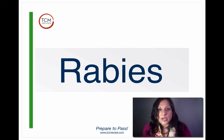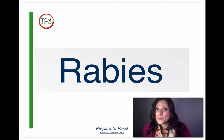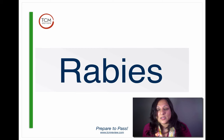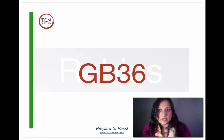Next we have rabies. And well, if someone has rabies, you're sending them to the ER. But if you want to know what point you would use for rabies, it's GB36.